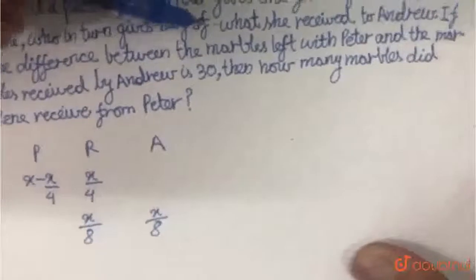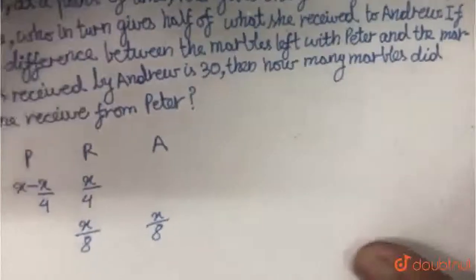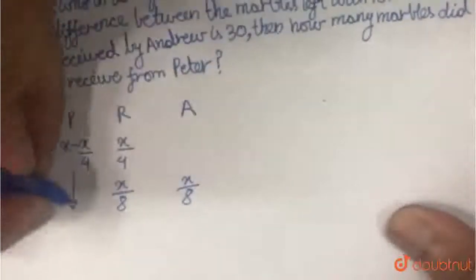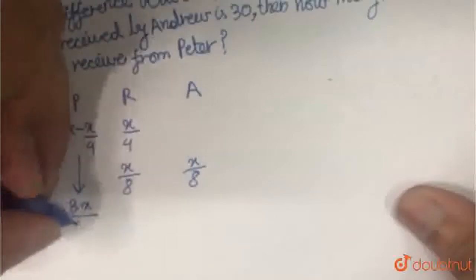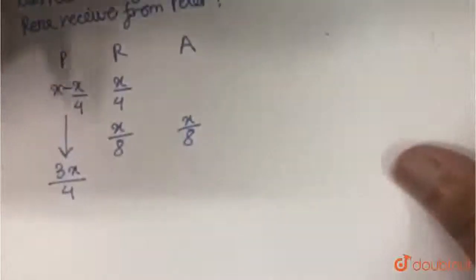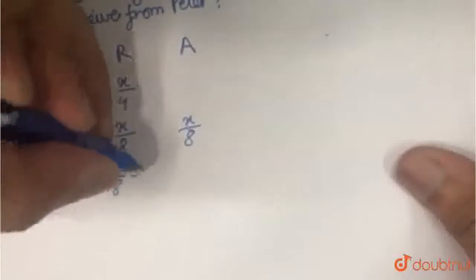Now they say that the difference between the marbles left with Peter and the marbles received by Andrew is 30. So how much marbles is left with Peter? Peter has X minus X by 4, which is 3X by 4 marbles left with him.